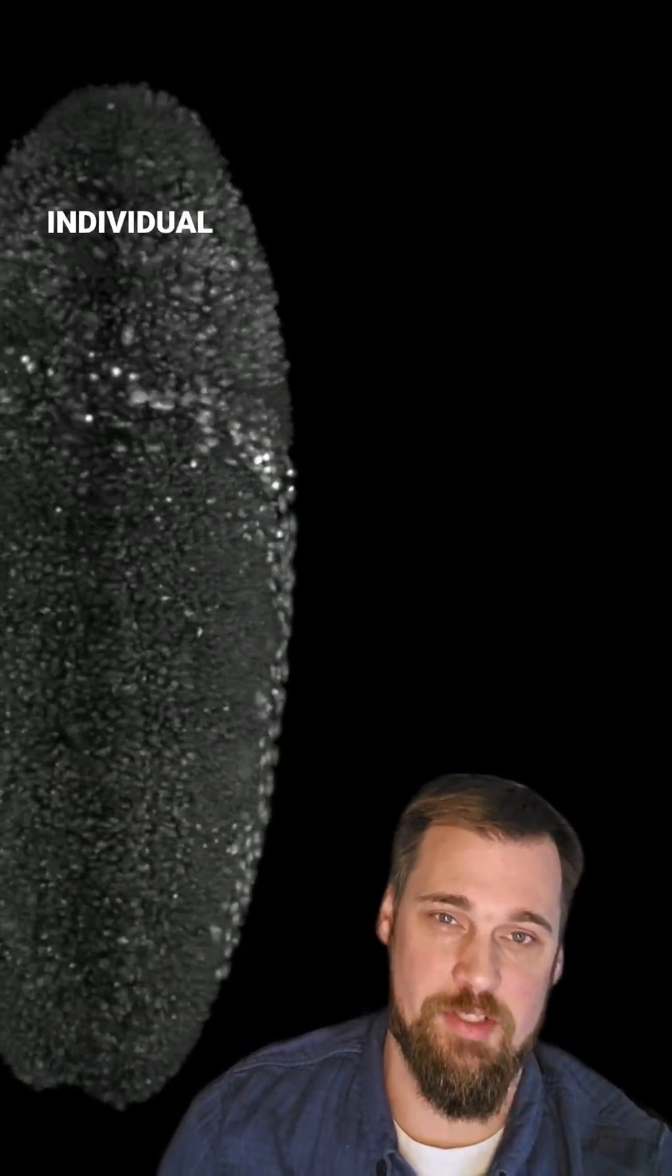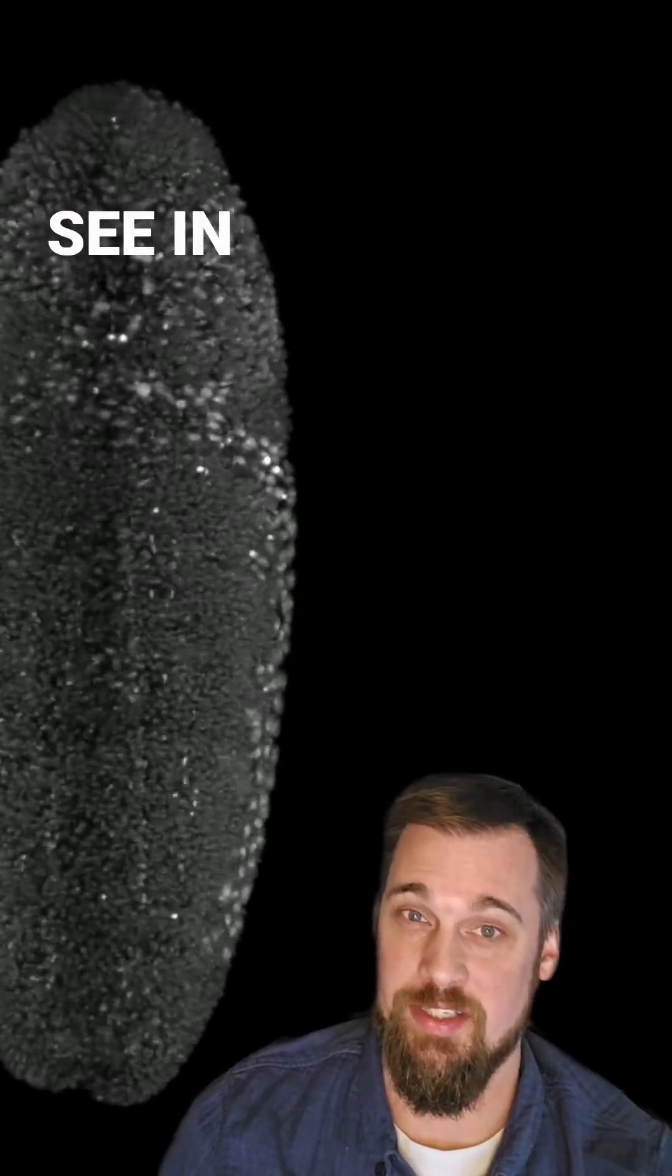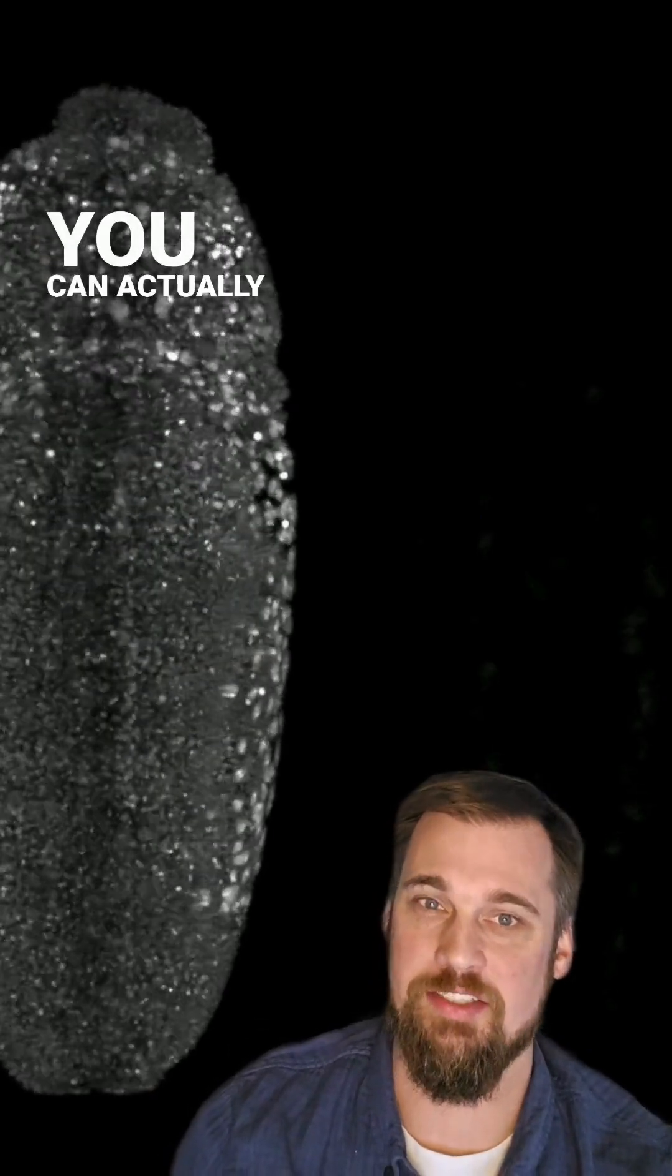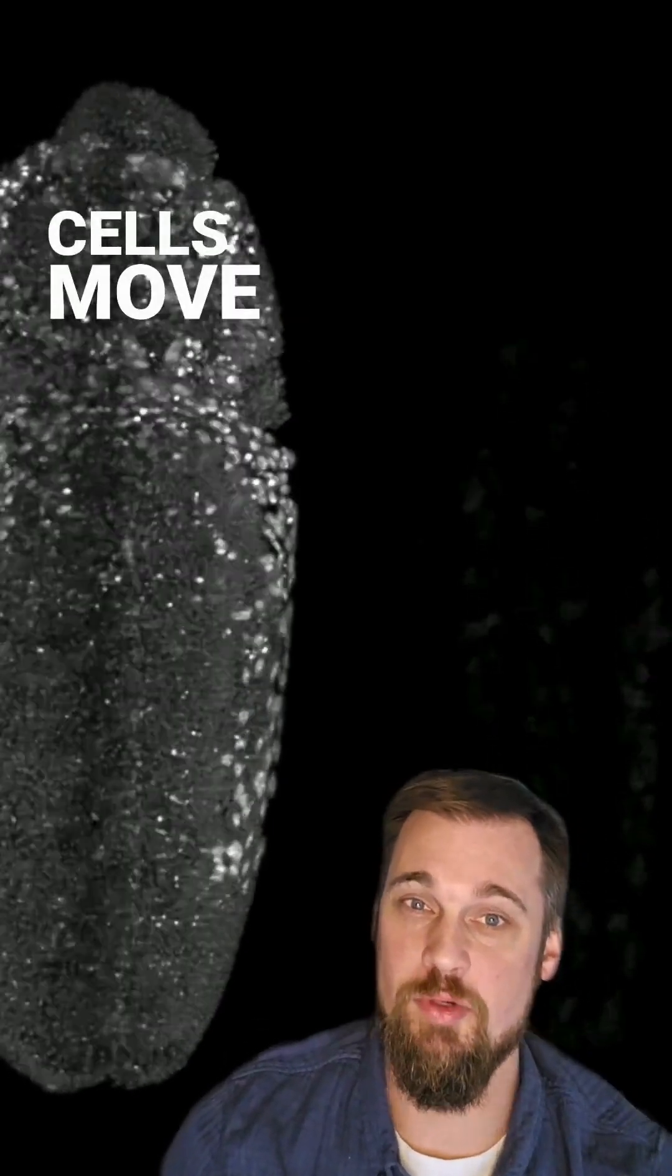Each one of the individual gray or white dots you see in that oval are individual cells in this developing embryo. And the cool part about this is you can actually watch as these cells move while the organism develops.